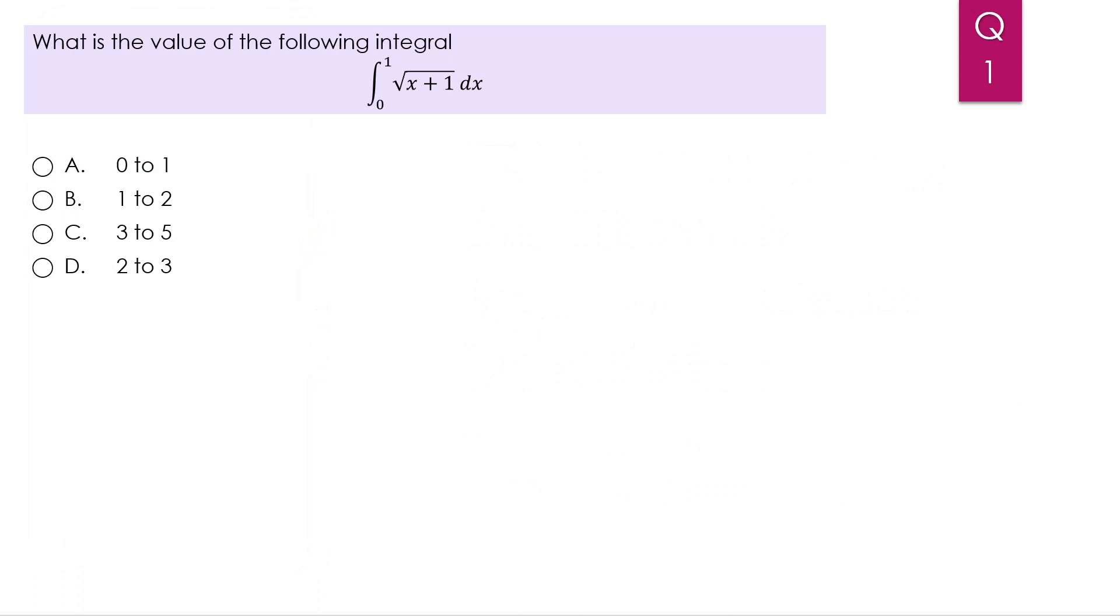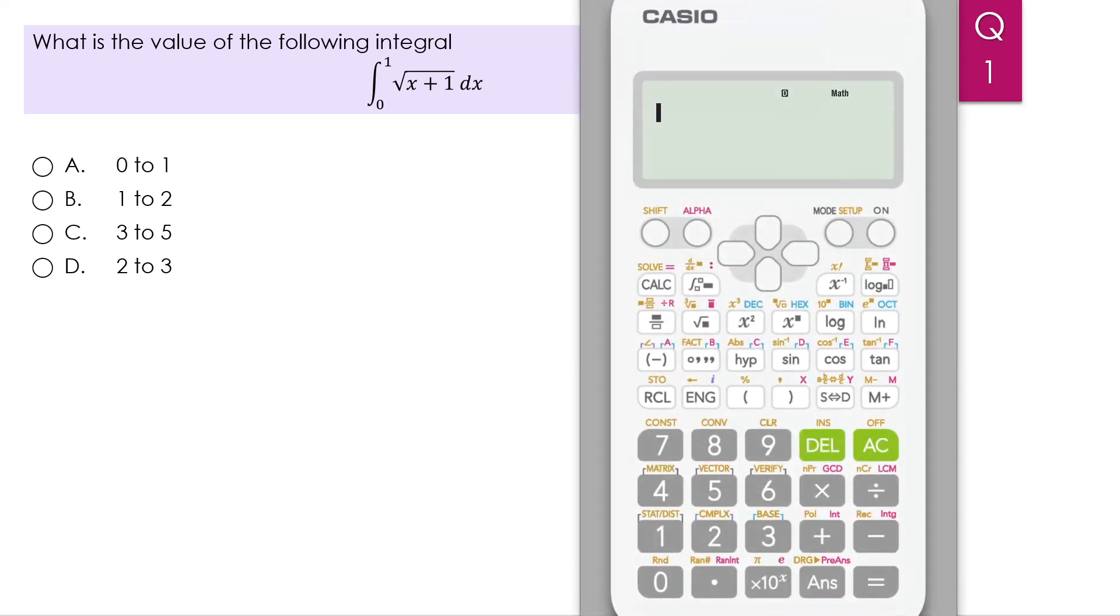The first question is, what is the value of the following integral? So we have the integration from 0 to 1 of the square root of x plus 1. Now instead of doing this integral by hand and using u substitution, we can do it using our calculator to save our valuable time. So we can go to the integration notation.